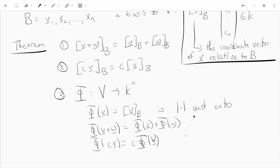Functions like this are going to be called linear, which we'll see. So this is one of the first examples of a linear function which takes a vector and gives you the coordinates.